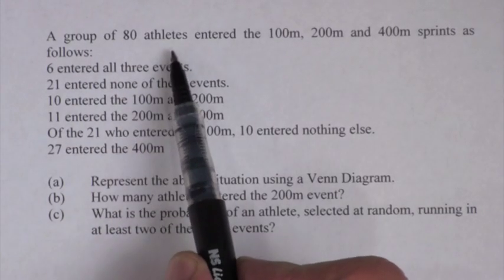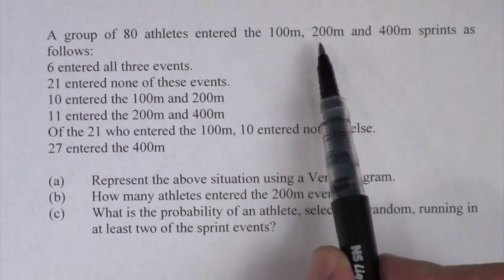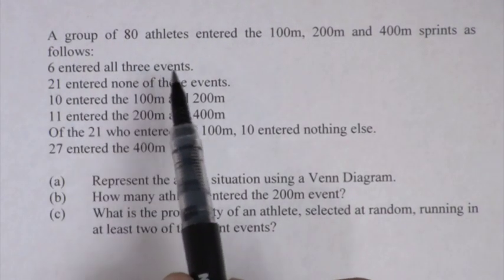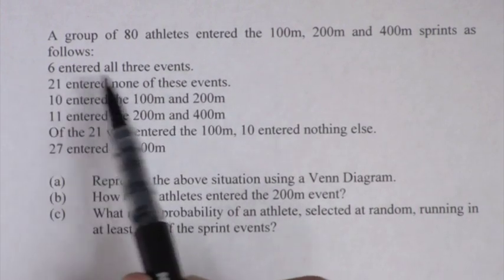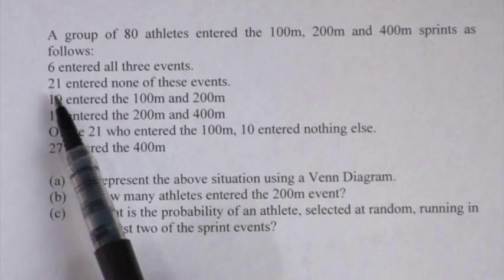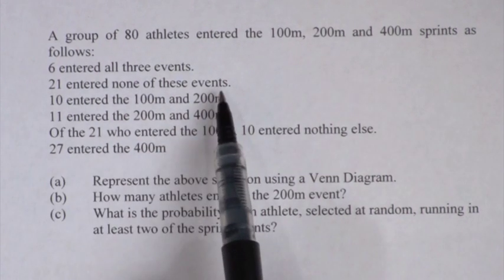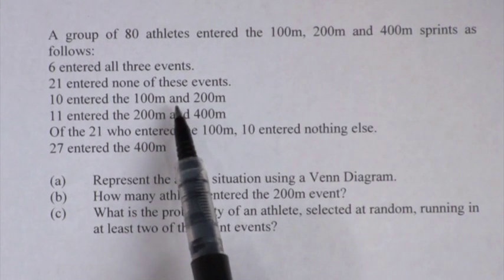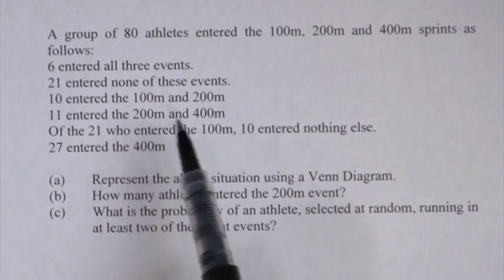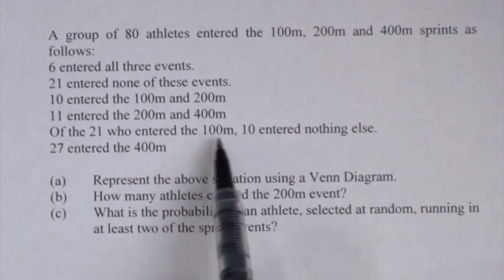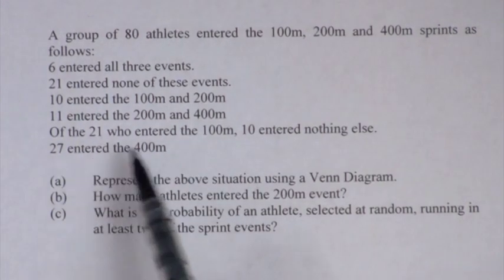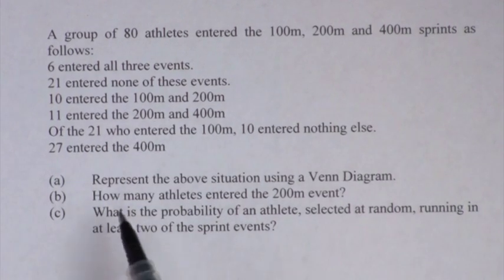Let's look at the following problem. A group of 80 athletes entered the 100m, 200m, and 400m sprints as follows. Six entered all three events — already think about where you will put that. Twenty-one entered none of the events. Ten entered the 100m and the 200m. Eleven entered the 200m and the 400m. Of the 21 who entered the 100m, 10 entered nothing else. Twenty-seven entered the 400m. Let's just read the first question.